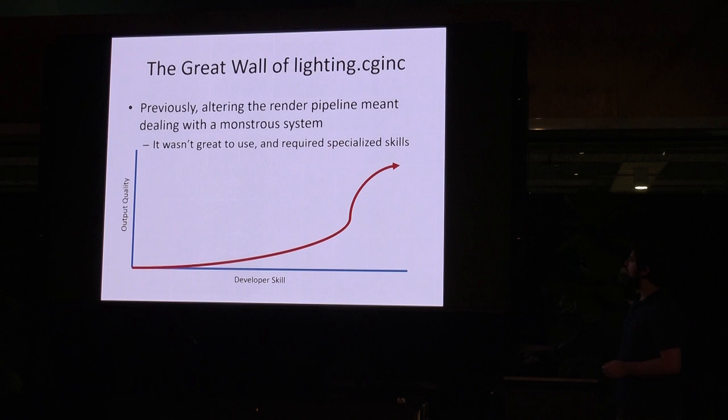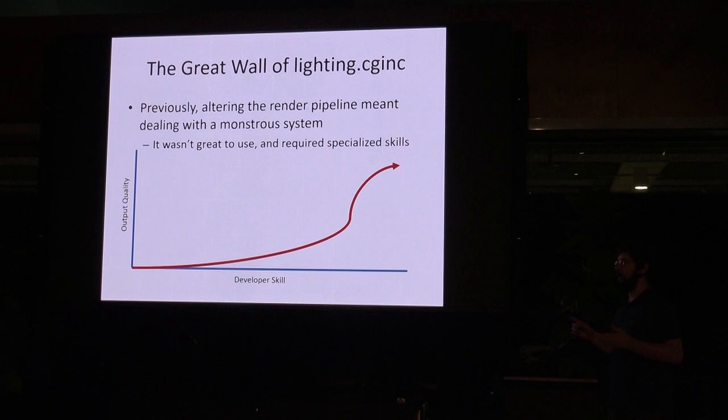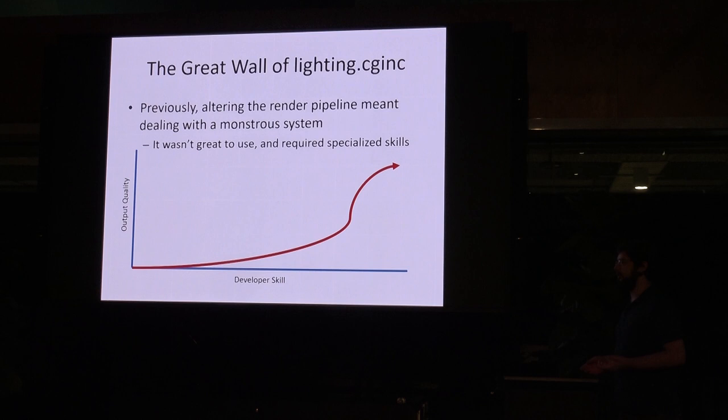Up first, a bit of a graph on what happens with the old system — the standard Unity rendering system. If you want to start messing with rendering methods, rendering styles, that kind of stuff, it's not really rewarding in terms of how much time and effort you put in versus your output quality. It's got a difficulty curve that's just like a cliff — basically the Great Wall of China.